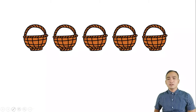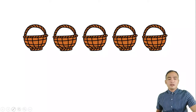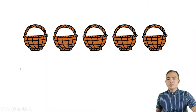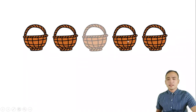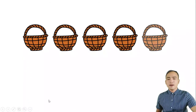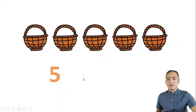What can you see on the screen? Those are baskets. Let us count how many baskets there are: 1, 2, 3, 4, 5. There are 5 baskets.